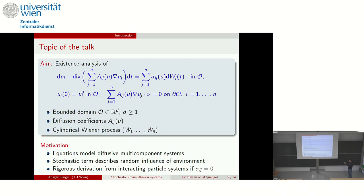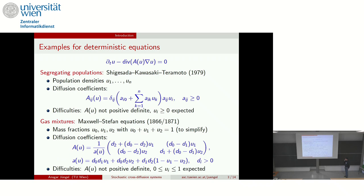Depending on the diffusion coefficients, you can derive the corresponding deterministic models from fluid dynamics or from interacting chemical systems. I promised two examples just to fix the ideas: one from biology about migrating populations, and another from physics. In fact, half of my talk is about the deterministic equation — I need to introduce the techniques.